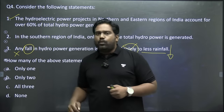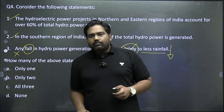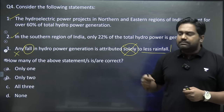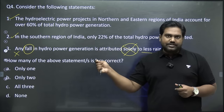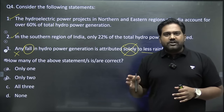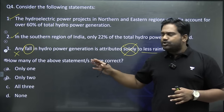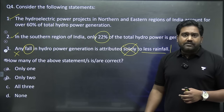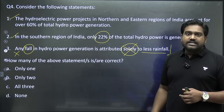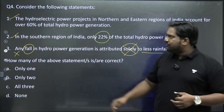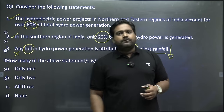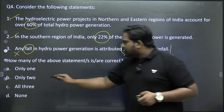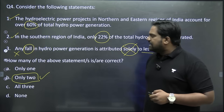It's safe to assume statements one and two are correct because Himalayan rivers definitely contribute more to hydropower compared to peninsular rivers. Data from the Ministry of Power clearly shows around 22% hydropower is generated from southern regions while 60% is generated in the northern and eastern Himalayan belt. So two statements are correct, and option B becomes the right answer.